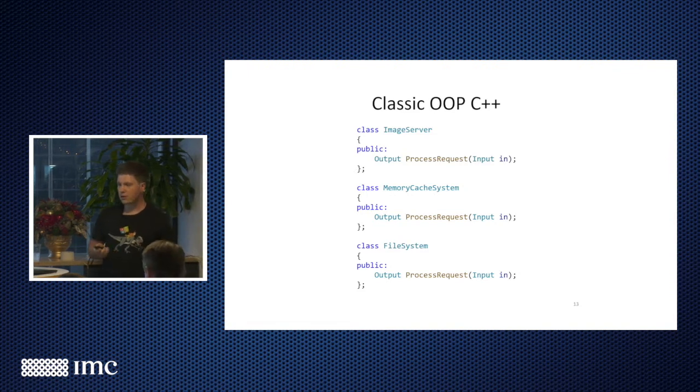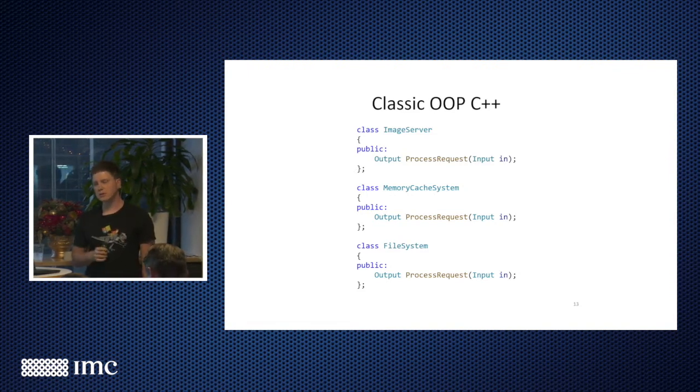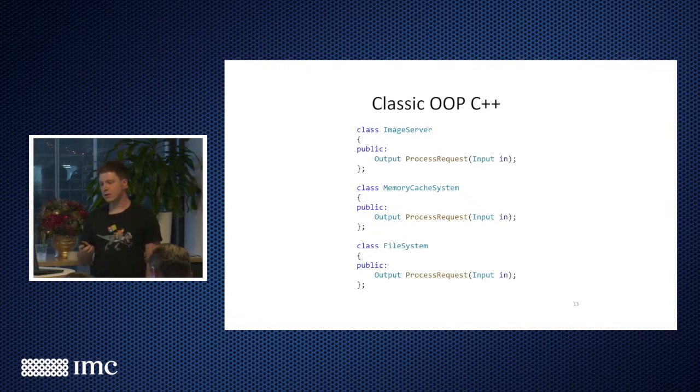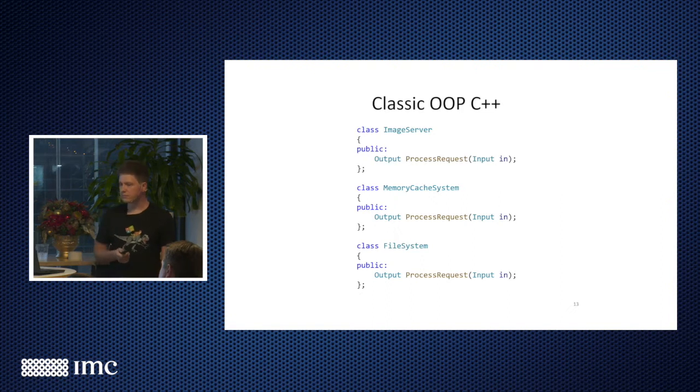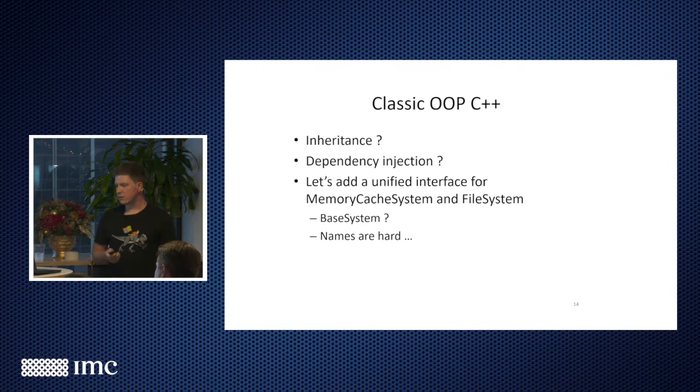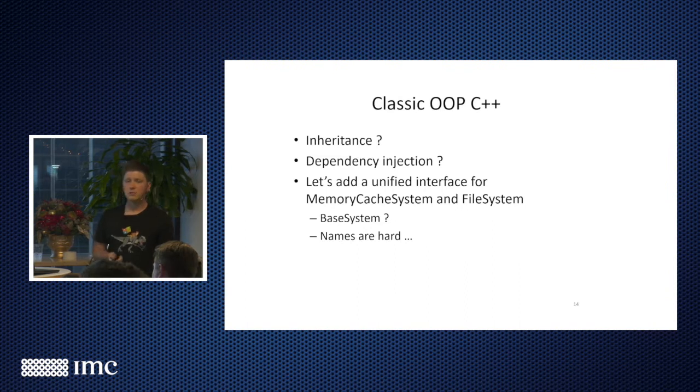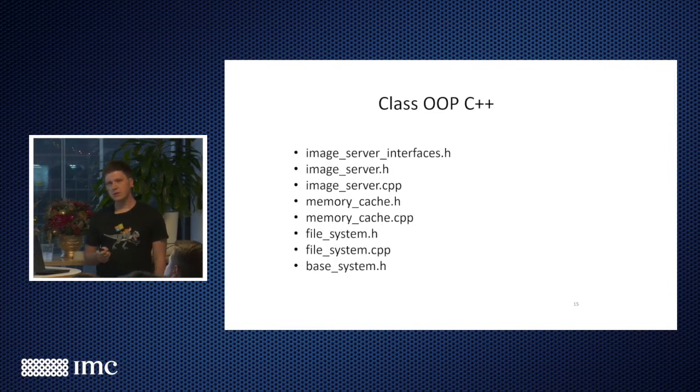So if you design this image server in C++, classic C++, because there are many ways to do it, you write your high-level interface, which is going to be like image server. We take input, we return output, we somehow report errors, maybe through exceptions, maybe through error codes. Then you're going to have memory system, cache, and file system. It's very classic. Then you might start adding inheritance if you want it, because you might realize that memory cache has a lot in common with file system. Maybe you need to do mock testing with mocks, and now you need dependency injection so it makes sense to extract interface. Hard to name interfaces. Let's go with base system.